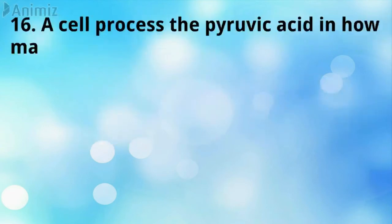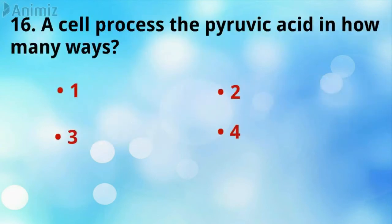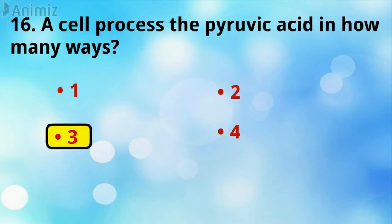A cell processes pyruvate in how many ways? In three ways.